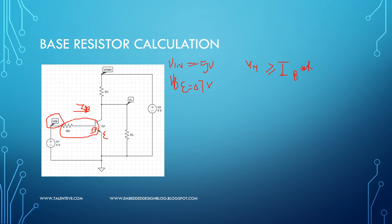So Vin should always be greater than or equal to IB into RB, right. IB into RB is nothing but the voltage drop across this resistor plus VBE. Okay, now if you take VBE that side, Vin is nothing but 5 volts, VBE is nothing but 0.7 volt, let us assume, is greater than or equal to IB into RB.